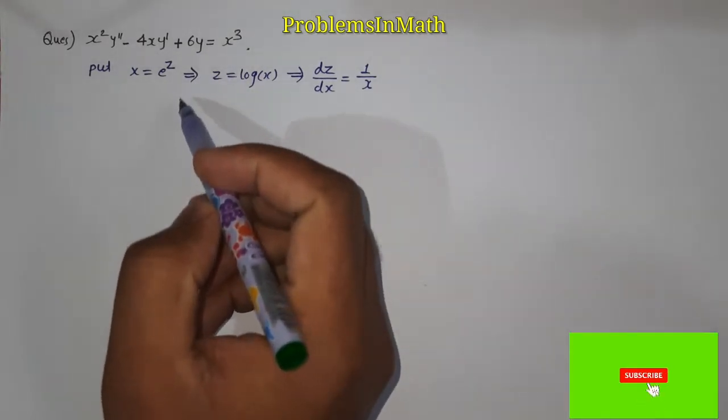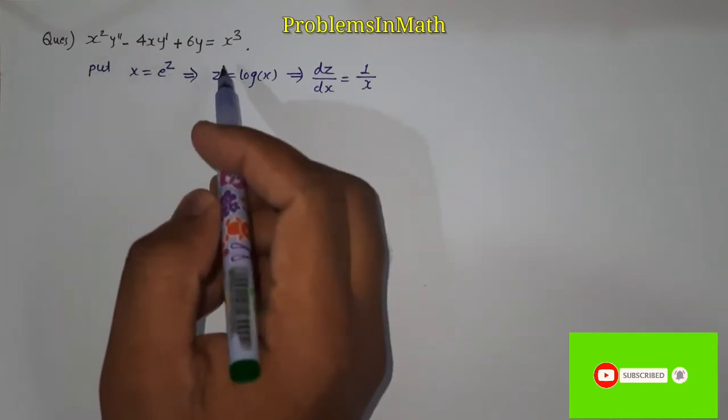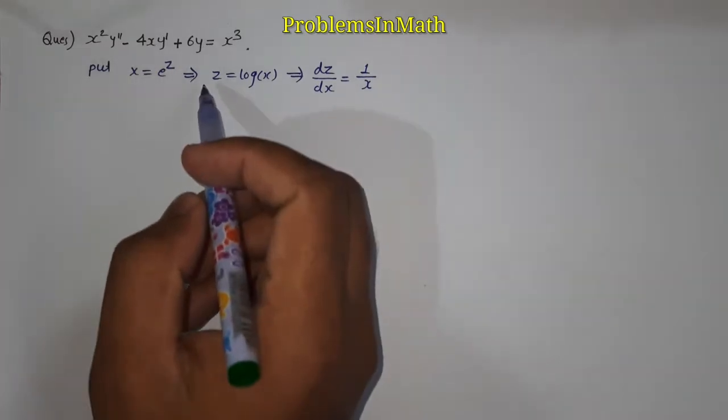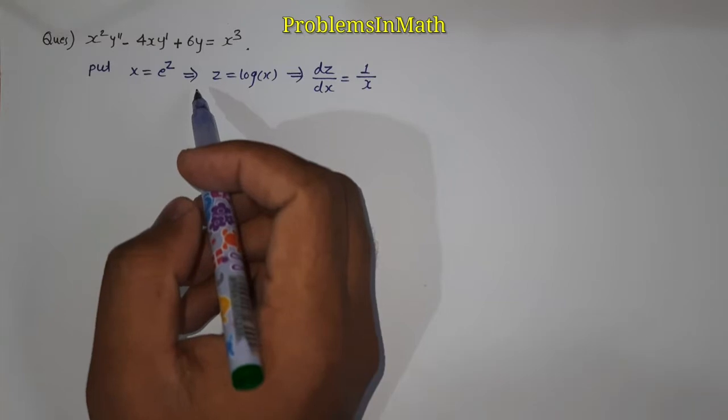First we recognize what kind of differential equation is this. Since it has variable coefficients and is a non-homogeneous differential equation, it is a Cauchy-Euler differential equation, sometimes we call it also the Euler equation.